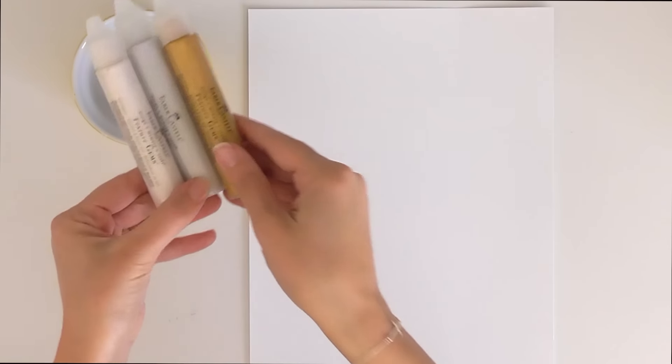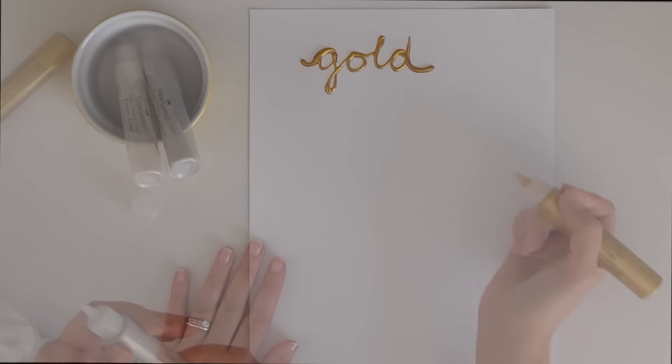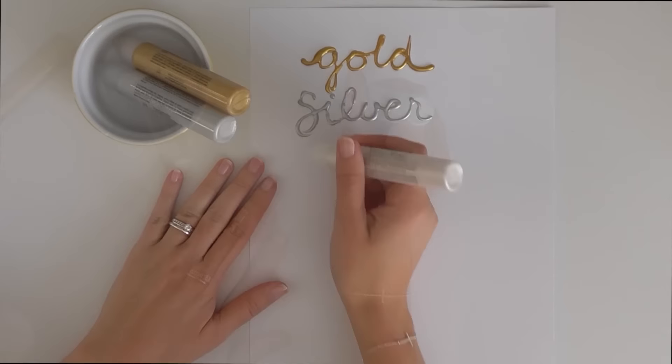The metallic texture gems come in these three colors. There's gold, silver, and pearl.